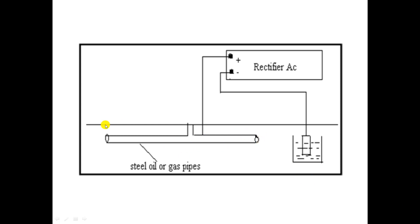Consider an iron or steel pipe inside moisture-containing soil, which will easily undergo corrosion. When the iron undergoes corrosion, it undergoes oxidation and produces electrons — these electrons reach the cathode, generating what we call a corrosion current. By using a battery, we apply a sufficient amount of current to suppress and nullify this corrosion current, making the iron act as a cathode. The negative terminal of the battery is connected to the more stable anode — here, graphite is used as the anode — and the steel pipe becomes the cathode. By passing a certain amount of current, the corrosion current is nullified and the metal is protected from corrosion.